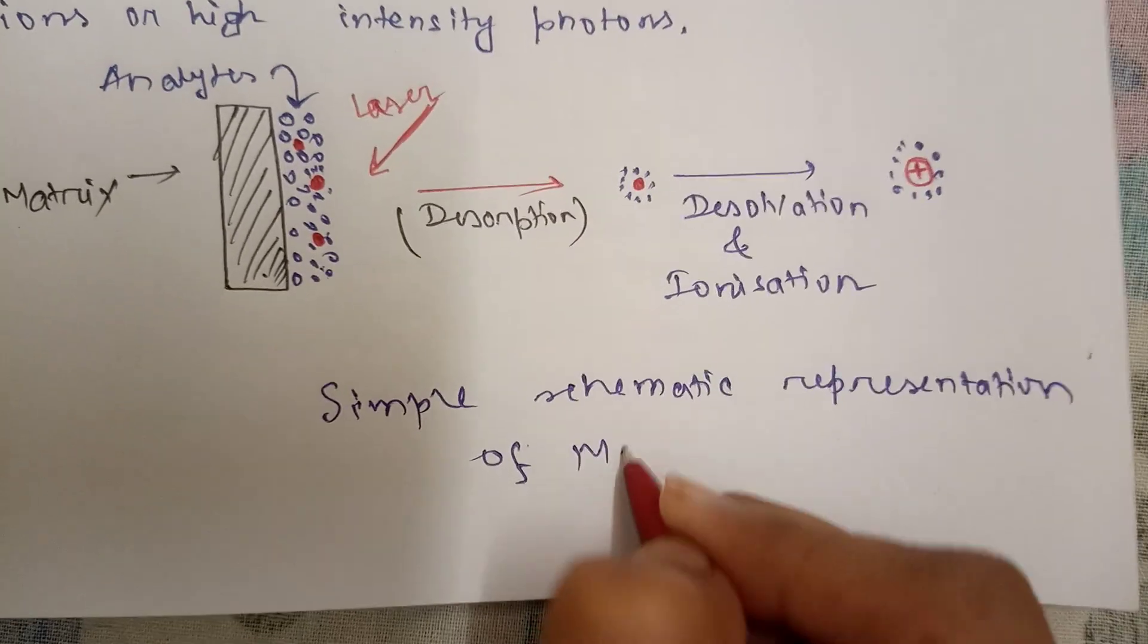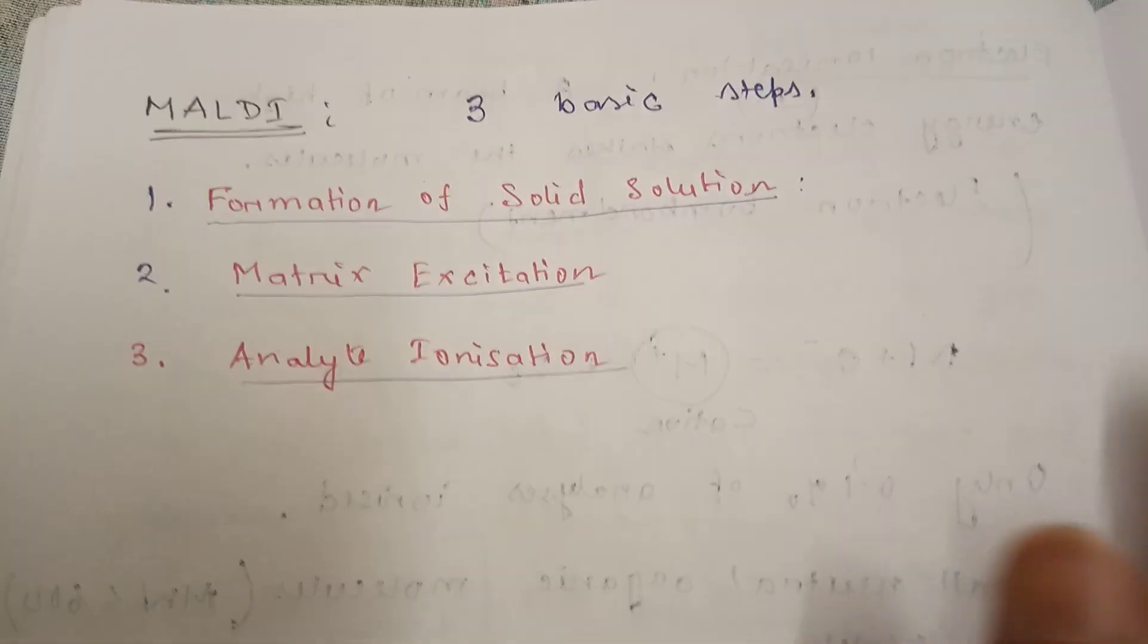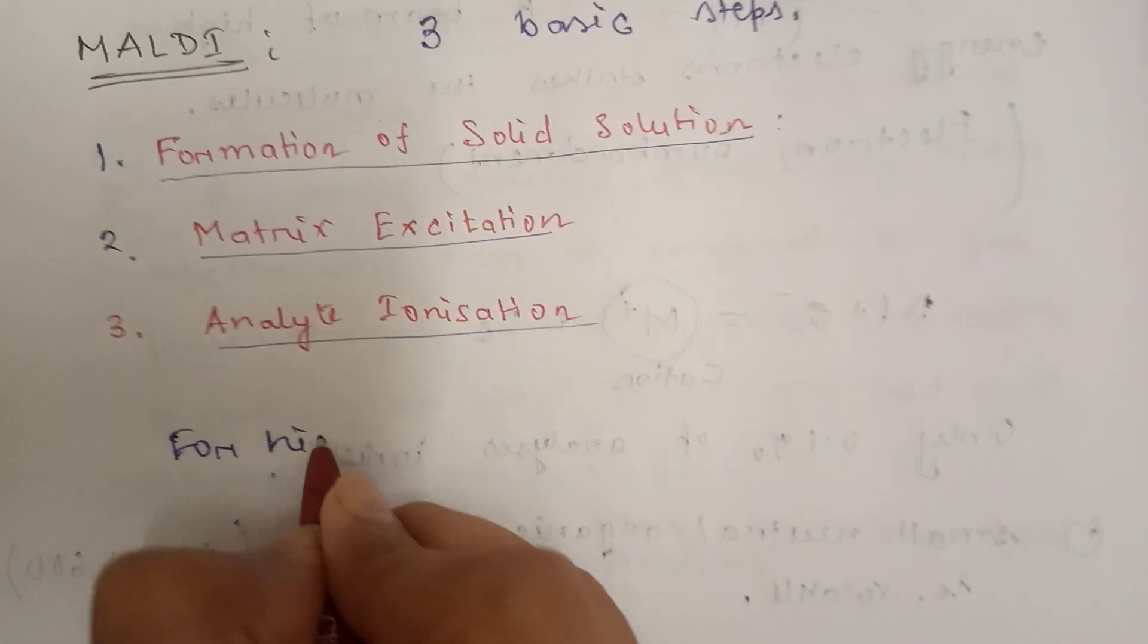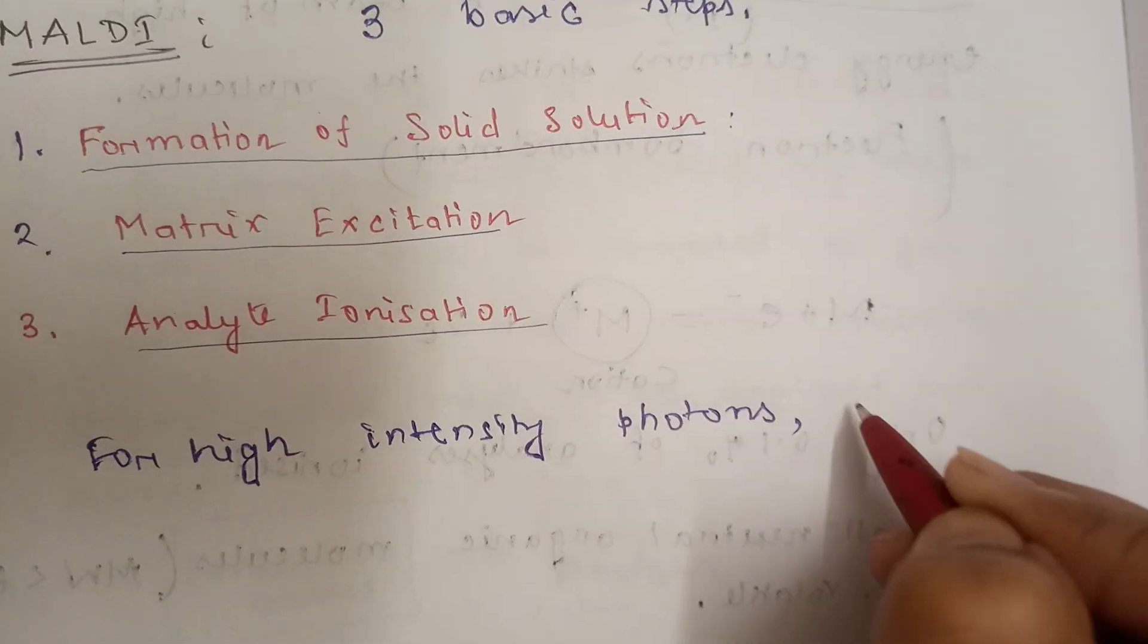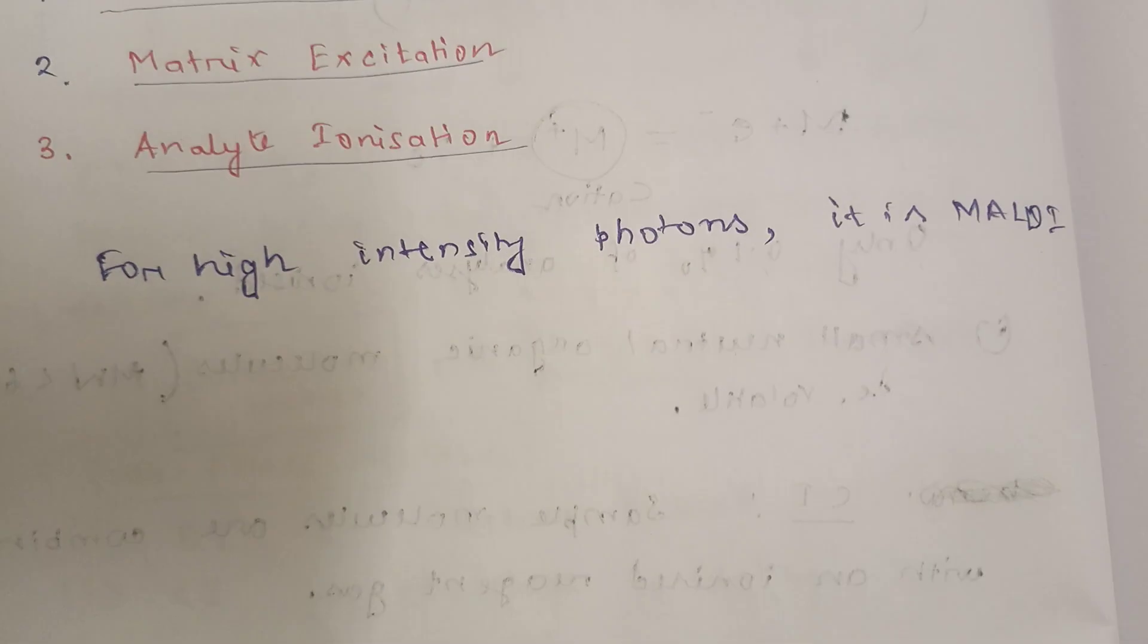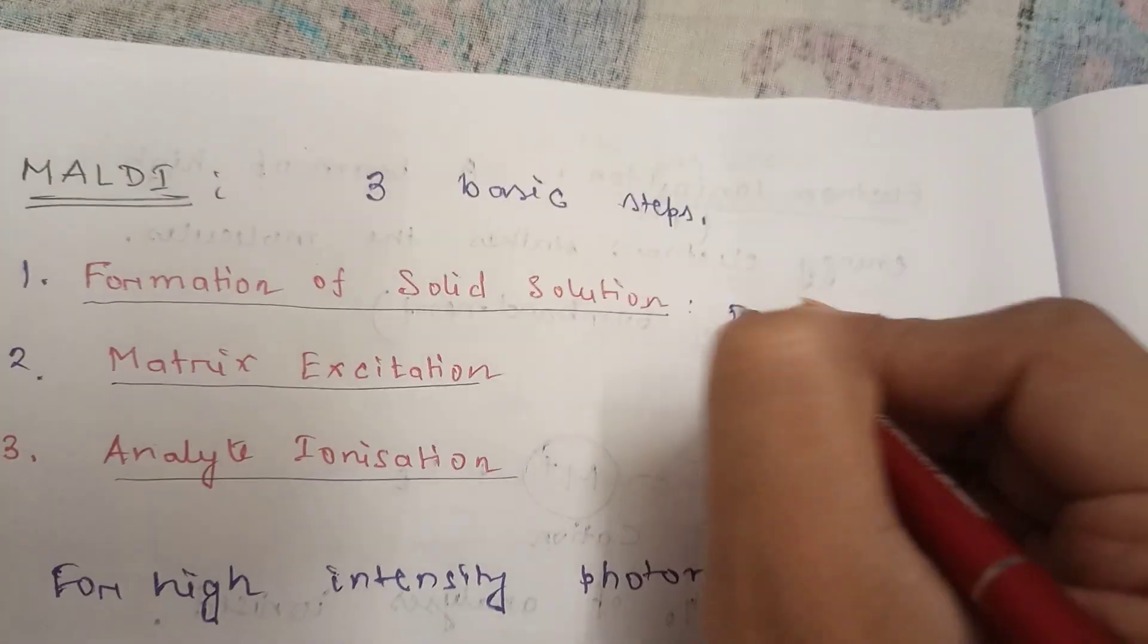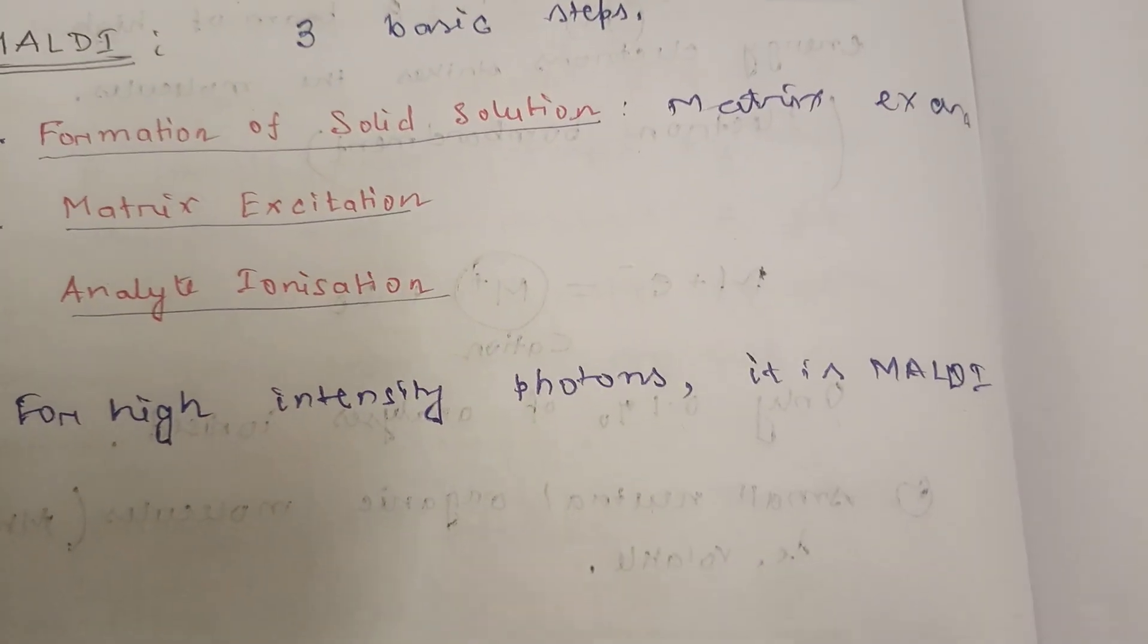Now we will go in details about MALDI. MALDI has three basic steps: first is formation of solid solution, then matrix excitation, and analyte ionization. Before that, remember for high intensity photons, it is MALDI. First, formation of solid solution. It is essential for the matrix to be in excess, thus leading to the analyte molecules being completely isolated from each other.